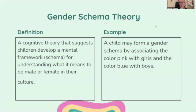Gender schema theory: a cognitive theory that suggests children develop a mental framework — a schema — for understanding what it means to be male or female in their culture. For example, a child may form a gender schema by associating the color pink with girls and the color blue with boys.